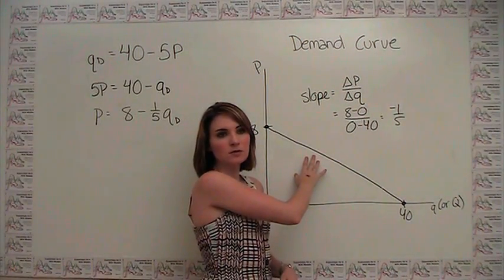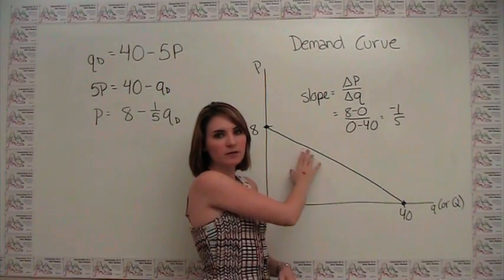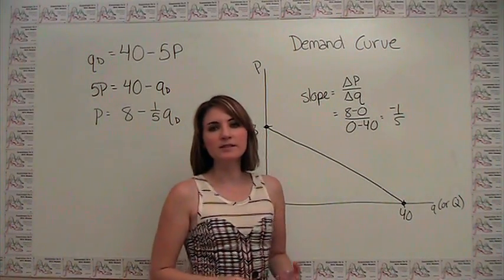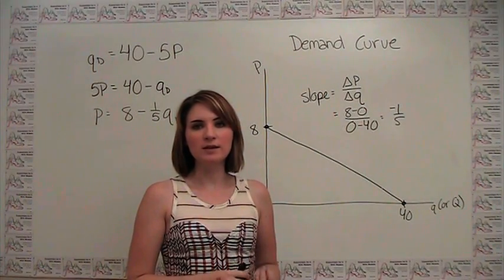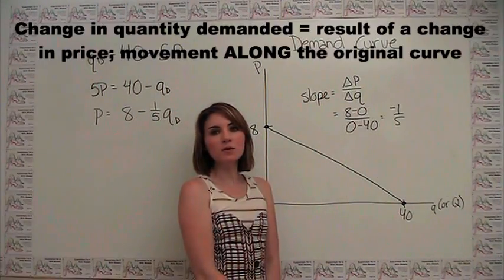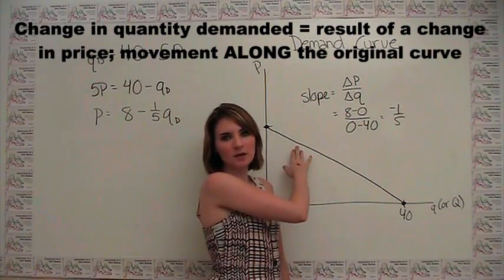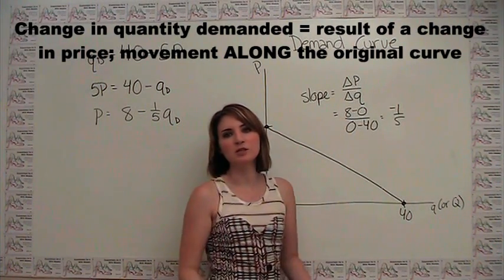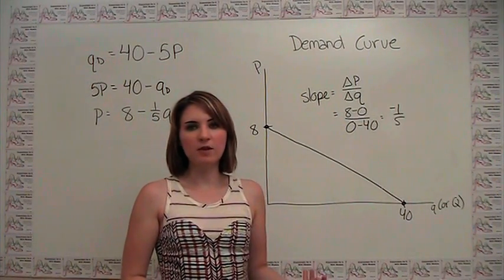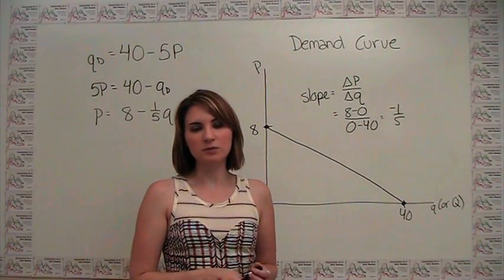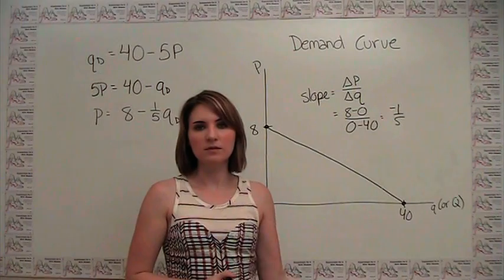One other thing that's helpful to note is that when we talk about moving from one point to another point on the same demand curve, we refer to this as a change in quantity demanded. In other words, when we have a change in price that causes us to move from one point to another, we say that this is a change in quantity demanded. We'll see how this differs from a change in demand, which we're going to talk about in the next lecture.